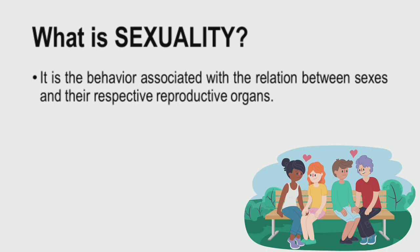We have a group of sexual classifications based on sexuality. We have heterosexual — you are heterosexual when your sexual preference is toward the opposite sex. If you are male and attracted to a female, that is heterosexual. We also have those individuals attracted to persons of the same sex, classified as homosexual, which includes gay and lesbian individuals.